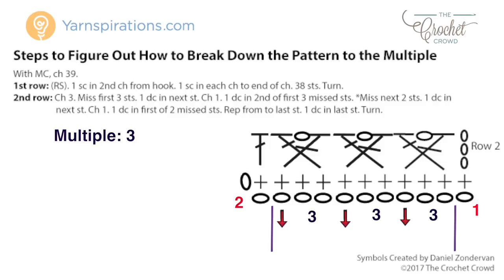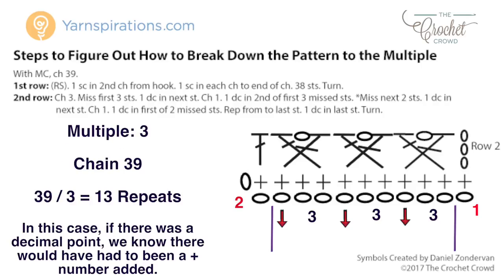How do we know if that's correct? We have to look back to the starting chain. The designer had us do a chain count of 39. To verify, take 39 and divide by 3 — that gives you an equal number of 13 with no decimal points. We know instantly that we were correct. If it came up as 13.7 or 13.3 we'd know that a multiple of three was incorrect and we'd have to re-figure it out. This is the exact way to do all of this and have confidence, because you have to get back to the original number.